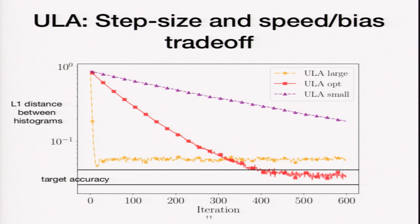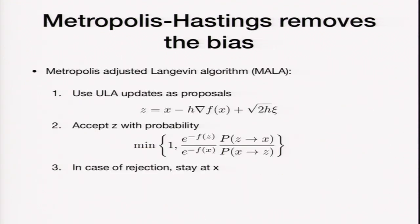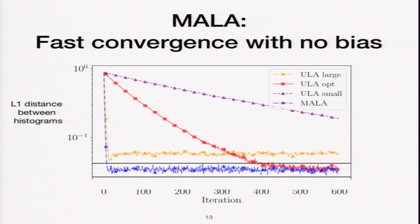The motivation is about removing this bias. Practitioners in the MCMC literature say: just add a Metropolis filter to your algorithm. This results in the Metropolis-adjusted Langevin algorithm (MALA), which uses ULA updates as proposals and adds an accept-reject step that forces the algorithm to have the right stationary distribution by enforcing detailed balance. Adding MALA to the previous plot shows it converges very fast, still enjoys fast convergence like ULA, but has no bias — it achieves the right accuracy.